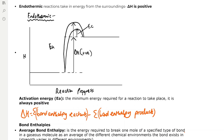Endothermic reactions take energy in from the surroundings, so the enthalpy change is positive. You can see that in this enthalpy profile diagram — the enthalpy increases from the reactants to the products as energy is taken in from the surroundings, and it has a very large activation energy. I've also drawn Ec, which is the enthalpy change with a catalyst, so you can see how catalysts actually decrease activation energy.